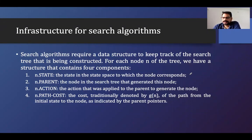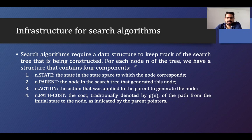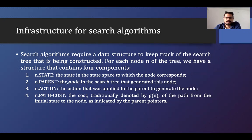Let's see the different infrastructure needed for searching algorithms. The searching algorithm requires a data structure to keep track of the tree being constructed. For each node n of the tree, we have a structure containing four components. The first is the state — node.state — the state of the state space to which the node corresponds. The second is node.parent, the node in the search tree that generated this node, called the parent node.